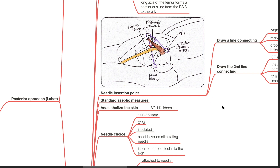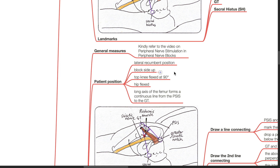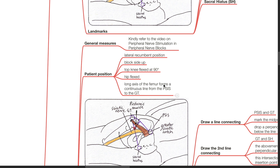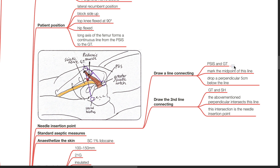Technique — general measures: kindly refer to the video on peripheral nerve stimulation in peripheral nerve blocks. Patient position: lateral recumbent, block side up, top knee flexed at 90 degrees, hip flexed, with the long axis of the femur forming a continuous line from the PSIS to the greater trochanter. Needle insertion point: draw a line connecting the PSIS and the greater trochanter, mark the midpoint, drop a perpendicular 5 cm below the line. Draw a second line connecting the GT and the sacral hiatus. The perpendicular intersects this line — this intersection is the needle insertion point.